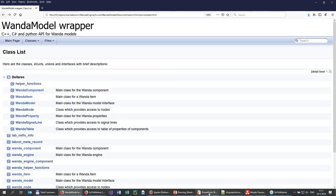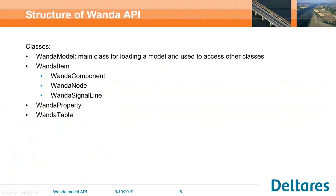The structure is: you have a Wanda model. In this Wanda model, you have Wanda components, Wanda nodes, and Wanda signal lines — all derived from the Wanda item class, since components, nodes, and signals all share a name. All these different items have properties and can have a table. Based on that, you can get the property, get the table, get a component, and manually manipulate them, ask for values, or get the time series.